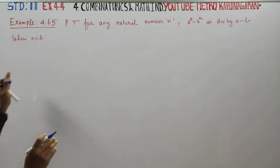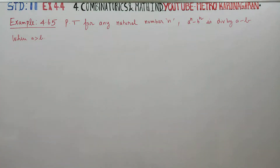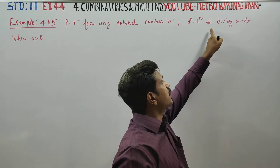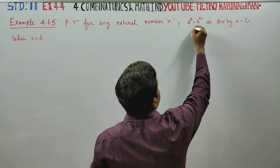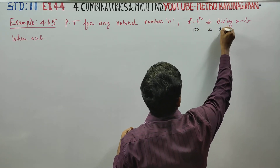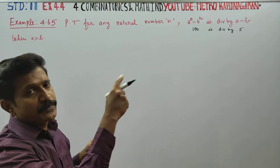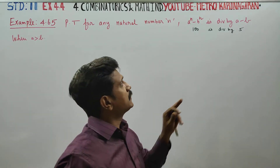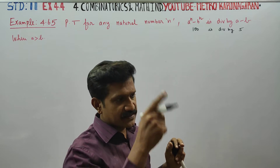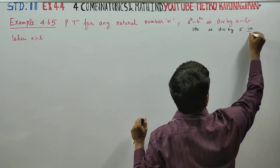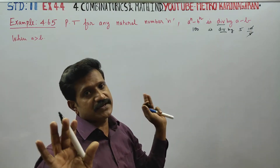Mathematical induction process: a power n minus b power n is divisible by a minus b. For example, 100 is divisible by 5. It is divisible by the factor. A power n minus b power n is divisible by a minus b.